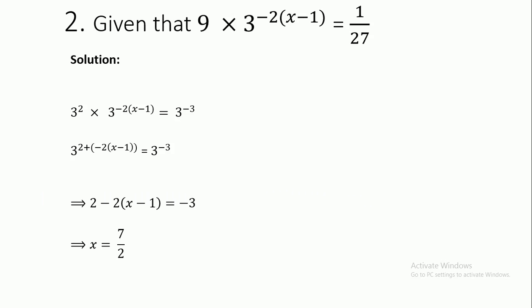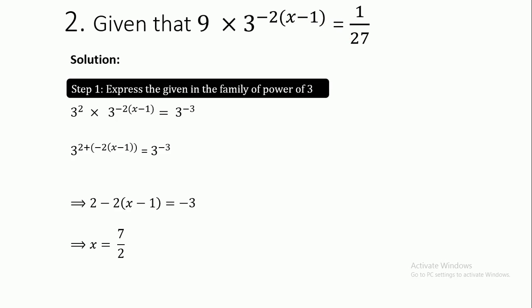Given that 9 × 3^(-2(x-1)) = 1/27, how do we find x? The first step is to express the given equation in powers of 3. We can see that 9, 3, and 27 can all be expressed as powers of 3.